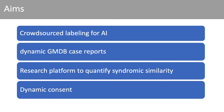Our long-term vision for GMDB is an even more dynamic model of publishing that allows cases to be updated easily, for example after a new patient consult. The research platform, which I will introduce in more detail later, allows clinicians to match multiple of their cases in the database and quantify their syndromic similarity to each other and to other cases in the gallery. This can be used, for example, to determine whether a phenotype is specific for a rare known disorder.